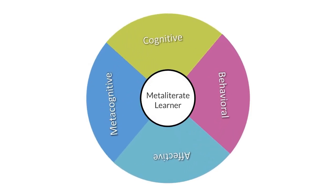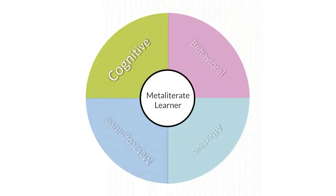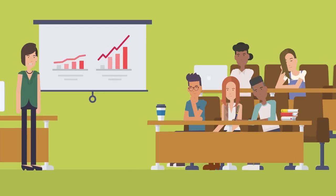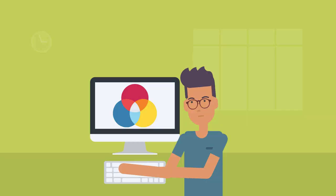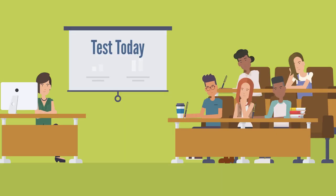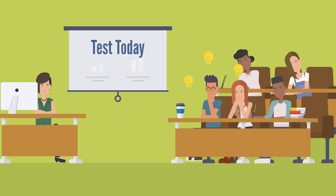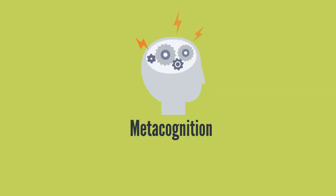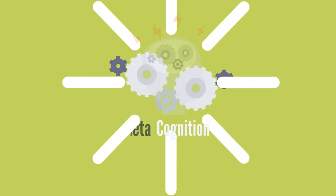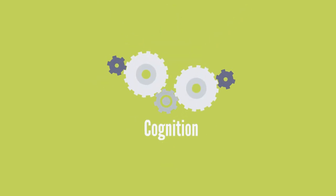The cognitive domain refers to your level of understanding and the knowledge gained after successfully completing learning activities. It involves the comprehension of information, the organization of ideas, the application of knowledge, and the ability to evaluate and think critically. While metacognition is thinking about one's own thinking, cognition is the thinking itself.